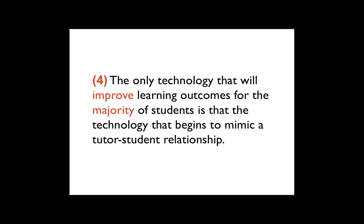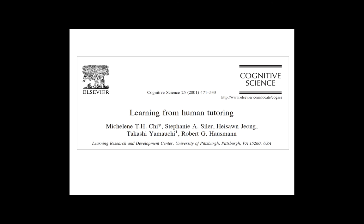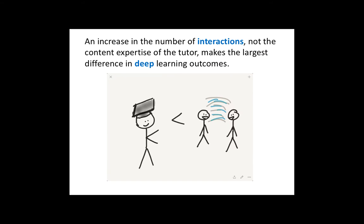I'm going to actually make the fourth prediction here and then I'm going to go into some more research around that. My fourth prediction is that the only technology that's really going to improve outcomes for the majority of students is a technology that begins to mimic a tutor-student relationship. And so, here's why. So, now we look at some of the follow-up research to this. So, this is a great paper on learning from human tutoring and then there's a whole bunch of follow-up papers to this one. But this particular paper does a whole lot of experiments around what is it, particularly around tutoring that makes tutoring so valuable.